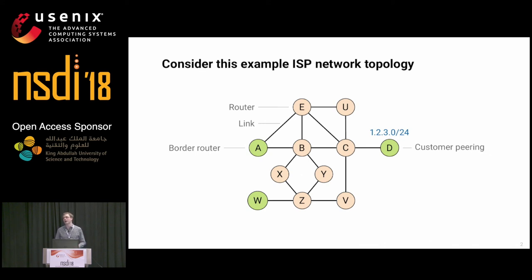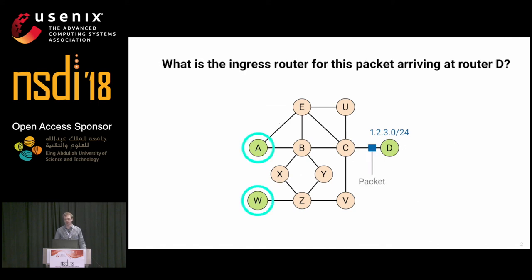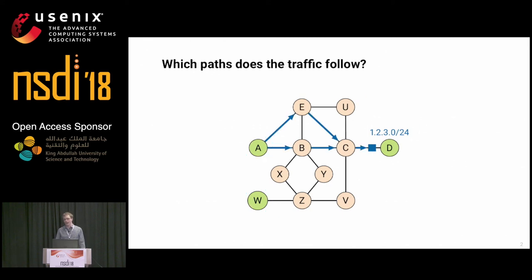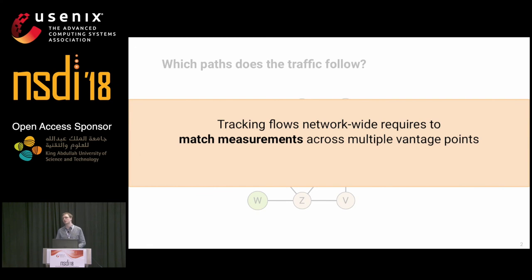You may want to answer some basic questions about your network — for example, where is the traffic coming from? Where did a packet about to enter my customer's network enter my own network? What path did it follow? These two questions require you to be able to match observations across several vantage points — for example, to understand that the packet you saw at router G entered the network at another place. That's actually not possible to do with in-network data sampling.